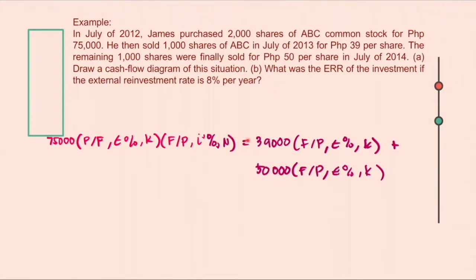For the benefits, the $39,000 is expressed as a future amount for the external rate, 8% per year, and then added with the $50,000, the future value of the $50,000 for the same rate of 8% per year.